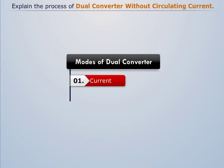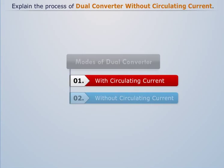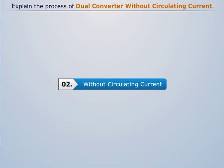There are two modes in a dual converter, one with circulating current and the other without the circulating current. Here we'll study the second mode only.